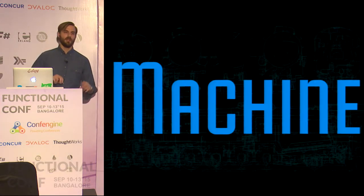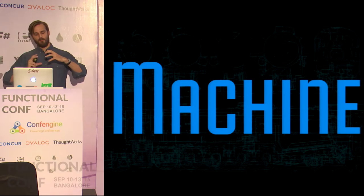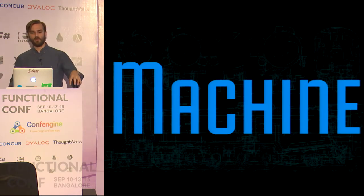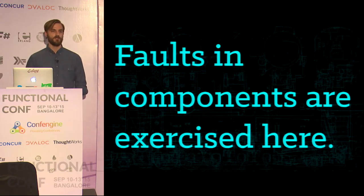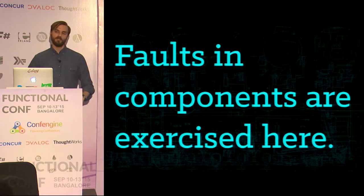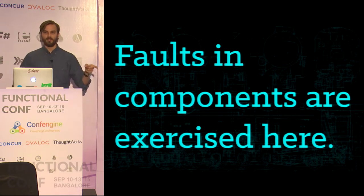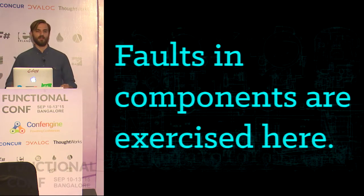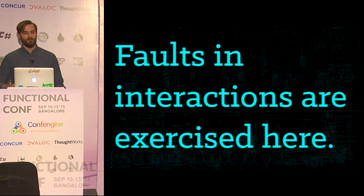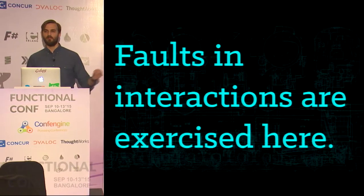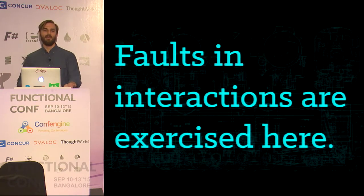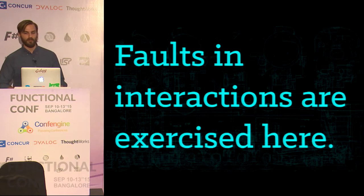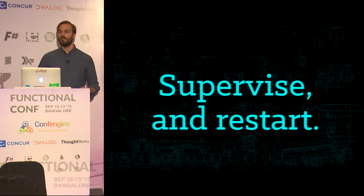The next component is the machine. You take all of these subsystems and cram them together into one physical computer. Faults in components are exercised here — this is the first place you actually notice that components in the running system have faults. Faults in interactions are exercised here for the first time — you have component A and component B and individually they're correct, but when you combine them, their concatenation is not a well-known thing. At the machine level, you have these components and they start failing — supervise them, and when you've detected that they fail, restart them, because you're not able to correct the fault.